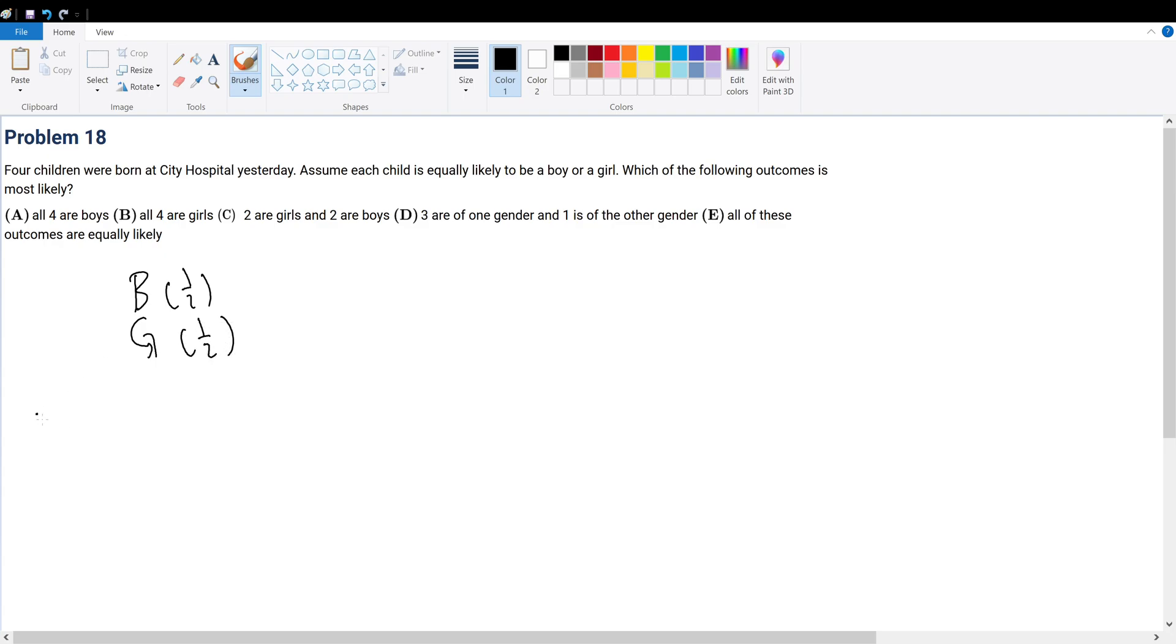Which of the following outcomes is most likely? Well, compute it for each. A is 1 over 2 to the 4th, right? And B is going to be 1 over 2 to the 4th as well.